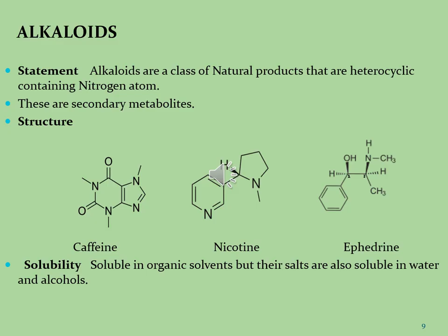Now, coming to the real topic — alkaloids. When we see these molecules, we observe that all phytoconstituents having nitrogen atoms within the heterocyclic ring system are generally known as alkaloids. These are secondary metabolites. Secondary metabolites are those substances used for the cure and treatment of different diseases and can be taken on demand. Primary metabolites are substances and chemicals necessary for the development and reproduction of living cells, whereas secondary metabolites are not necessary for the development and production of living cells.